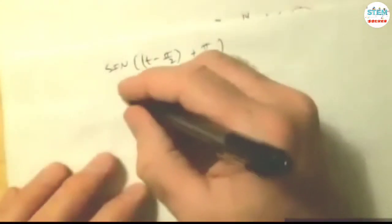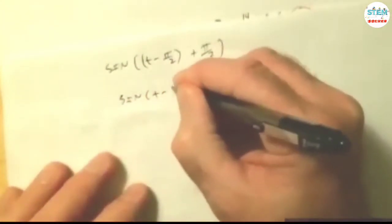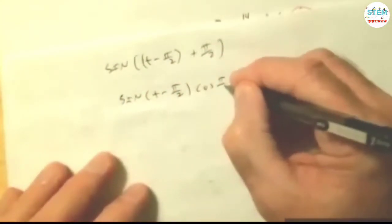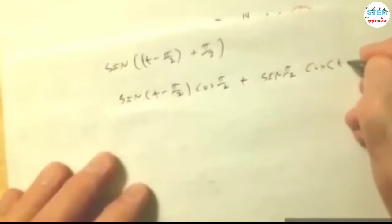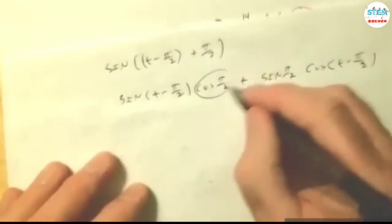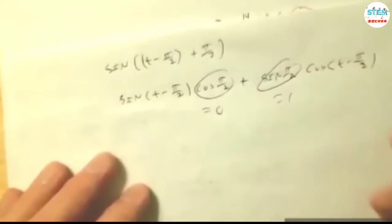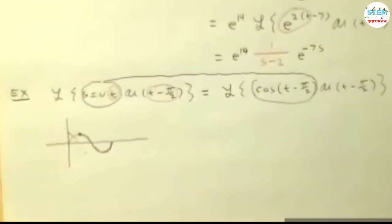The other option is if you want to use the identity. Cosine of t minus pi over 2 equals cosine of t minus pi over 2 cosine of pi over 2 plus sine of pi over 2 cosine of t minus pi over 2. That's the identity if you remember it. This is equal to 0, this is equal to 1, so you get cosine of t minus pi over 2, which is what we got here.